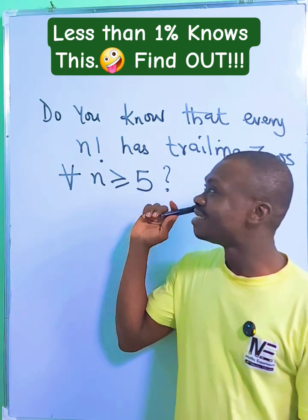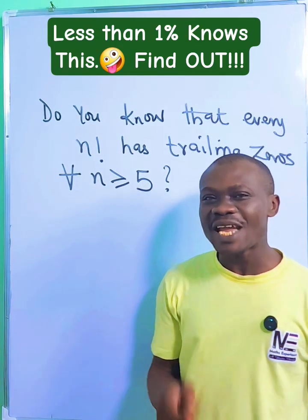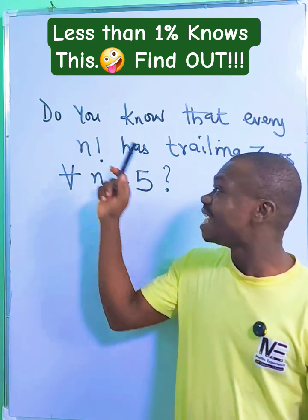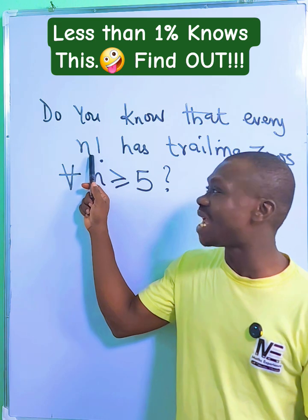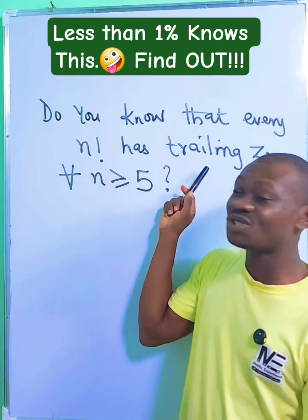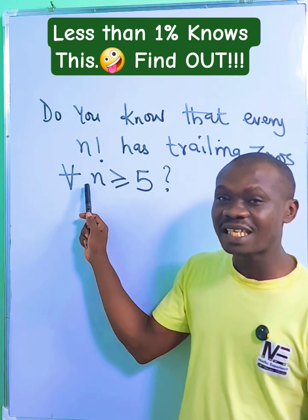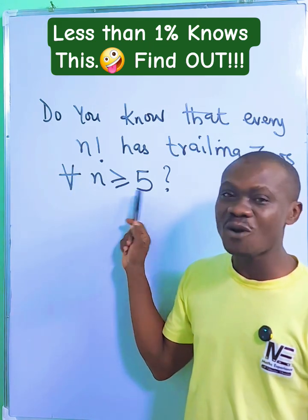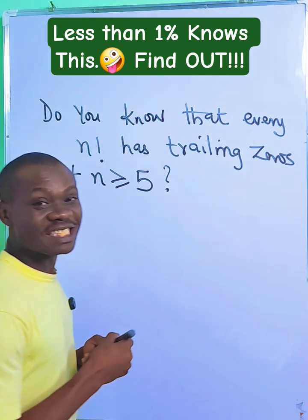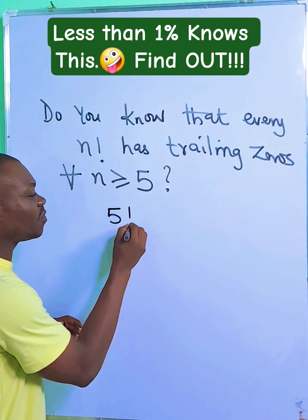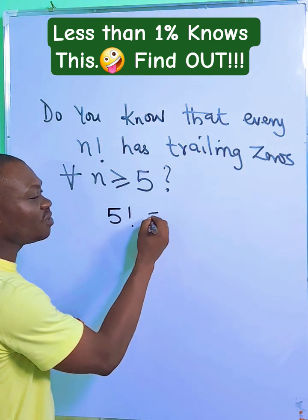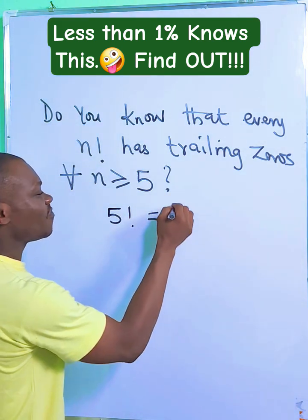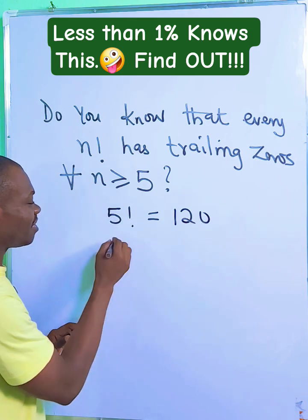See what we have on the board. I bet less than one percent of math learners have actually observed that every single factorial of n has a trailing zero once n is five or greater. This means for all n equal to five or above, the value will have a trailing zero at the end. For example, five factorial is 120 — there's a trailing zero.